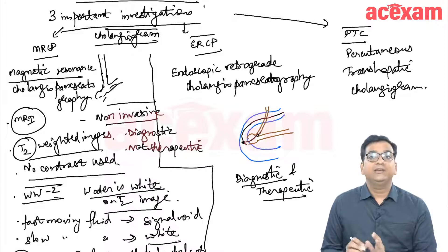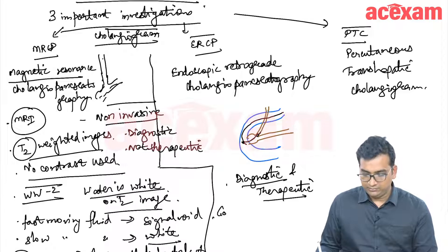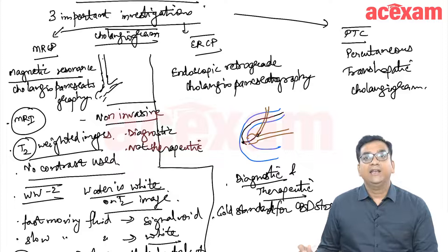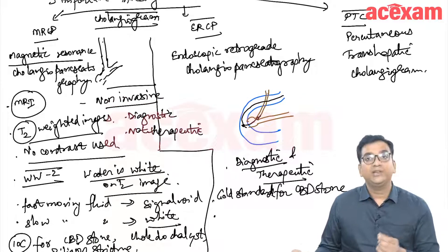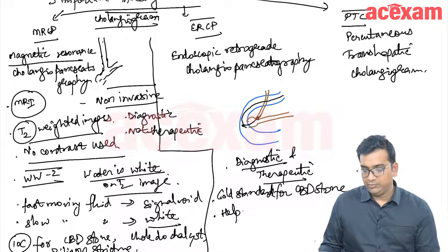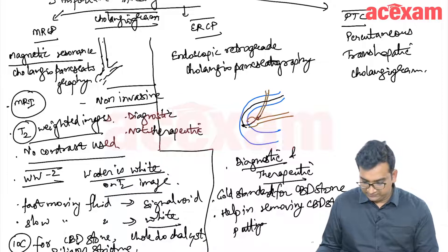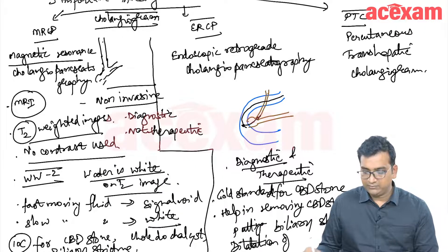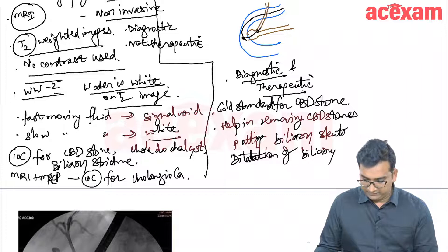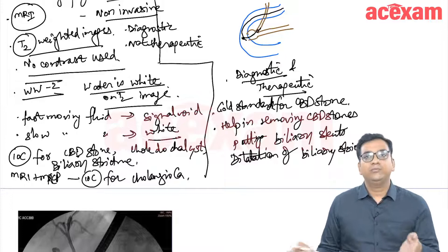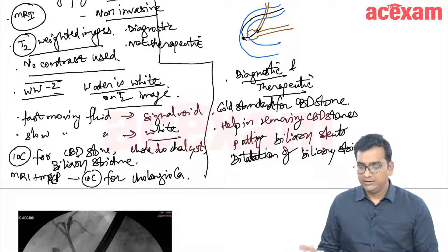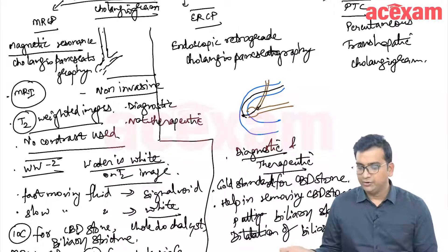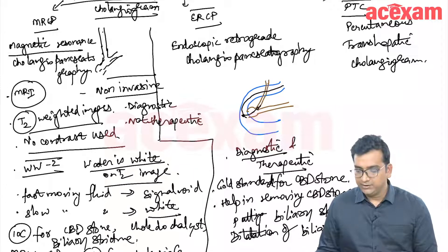ERCP is the gold standard investigation for CBD stones. It can help in removing CBD stones, putting biliary stents, dilatation of biliary strictures, and it also helps in cholangitis — we can improve cholangitis by putting a biliary stent and draining pus or infected bile. We can also drain jaundice by putting a stent in cases of malignancy.